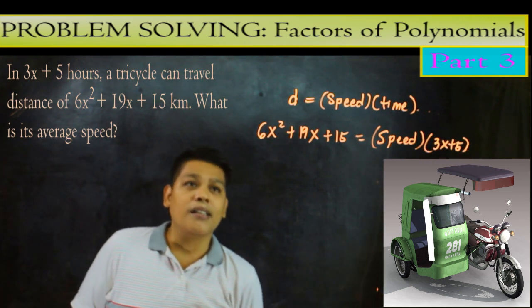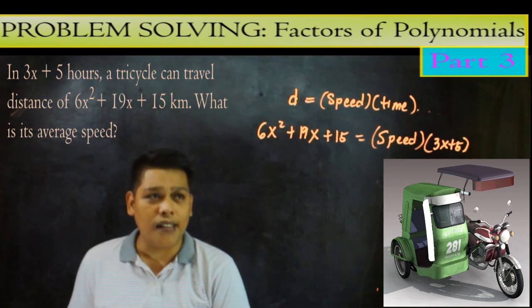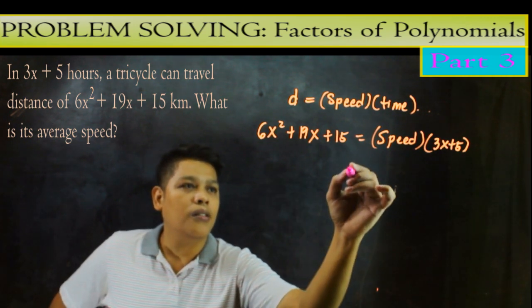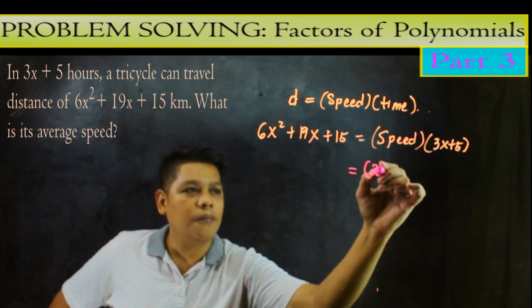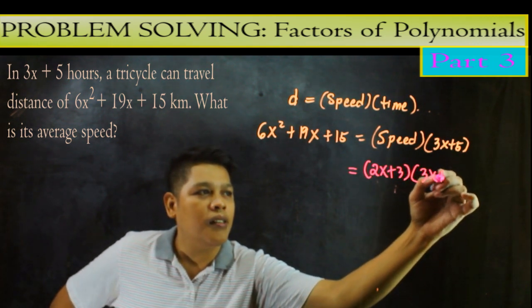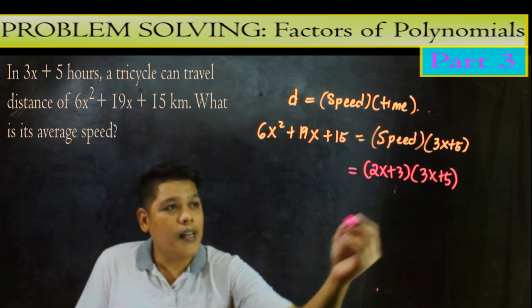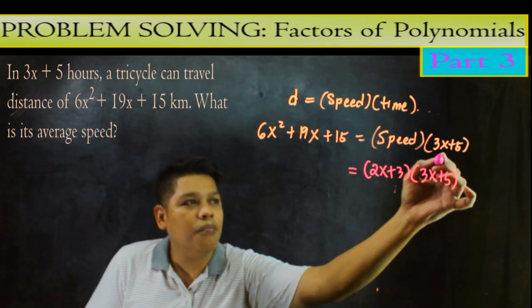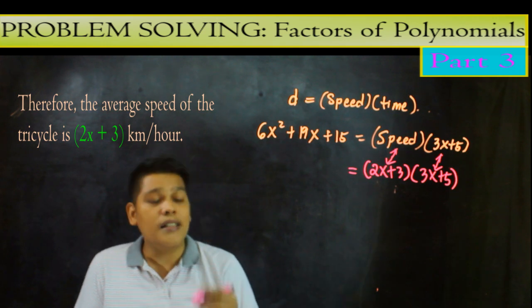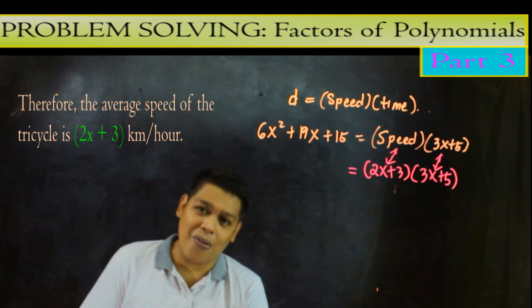So yung kaninang pinaktong natin. So ano ba yung faktong natin kanina rito? So sa 6x squared plus 19x plus 15. Nakuha natin yan na ang faktong ito, ay 2x plus 3. Ito naman yung 3x plus 5. So therefore, ang speed natin kung ito yung ating time ang speed natin therefore ang speed natin is the 2x plus 3 kilometer per hour.